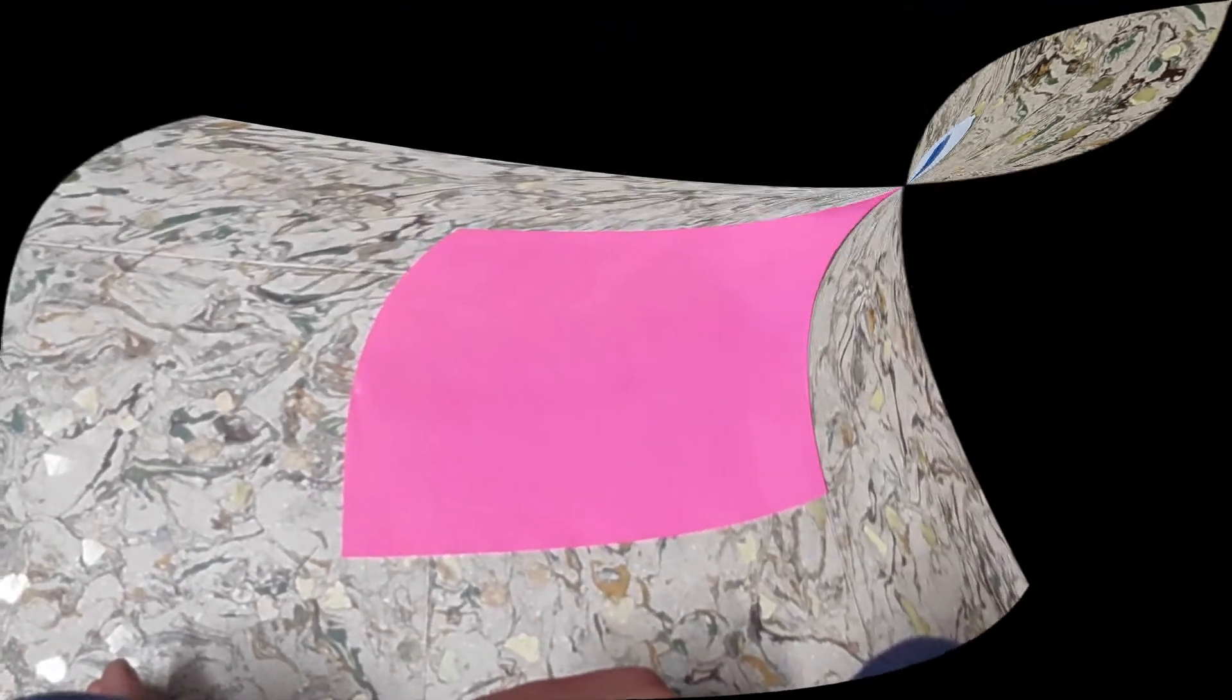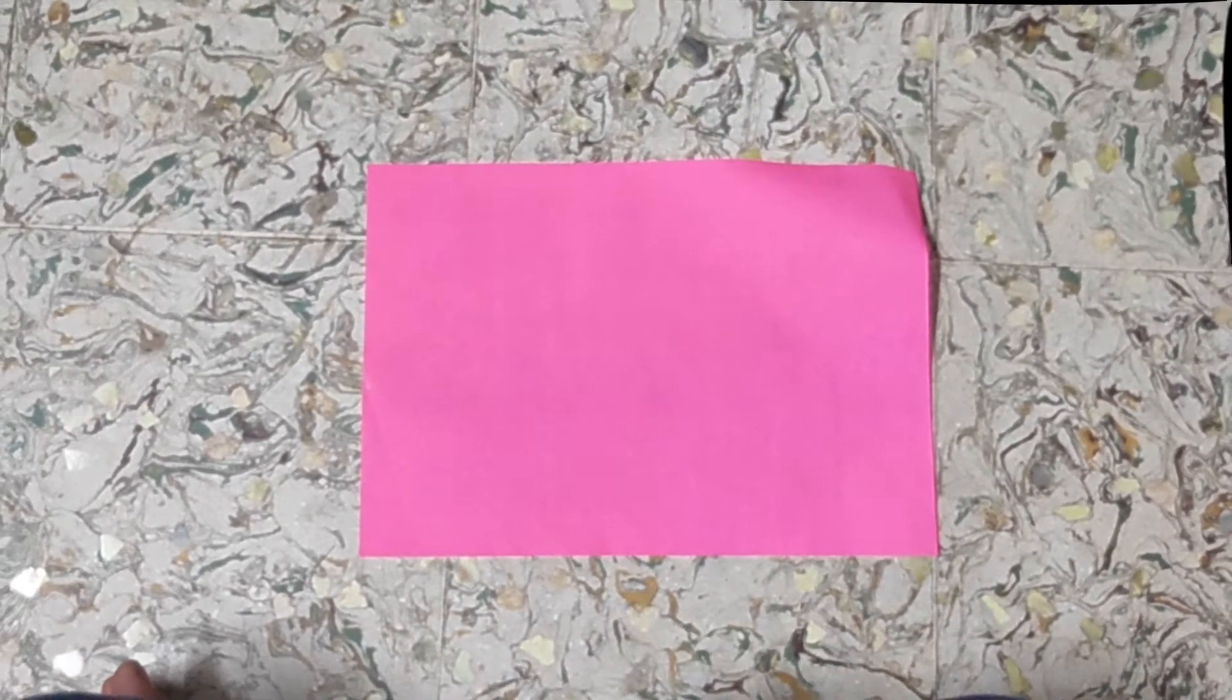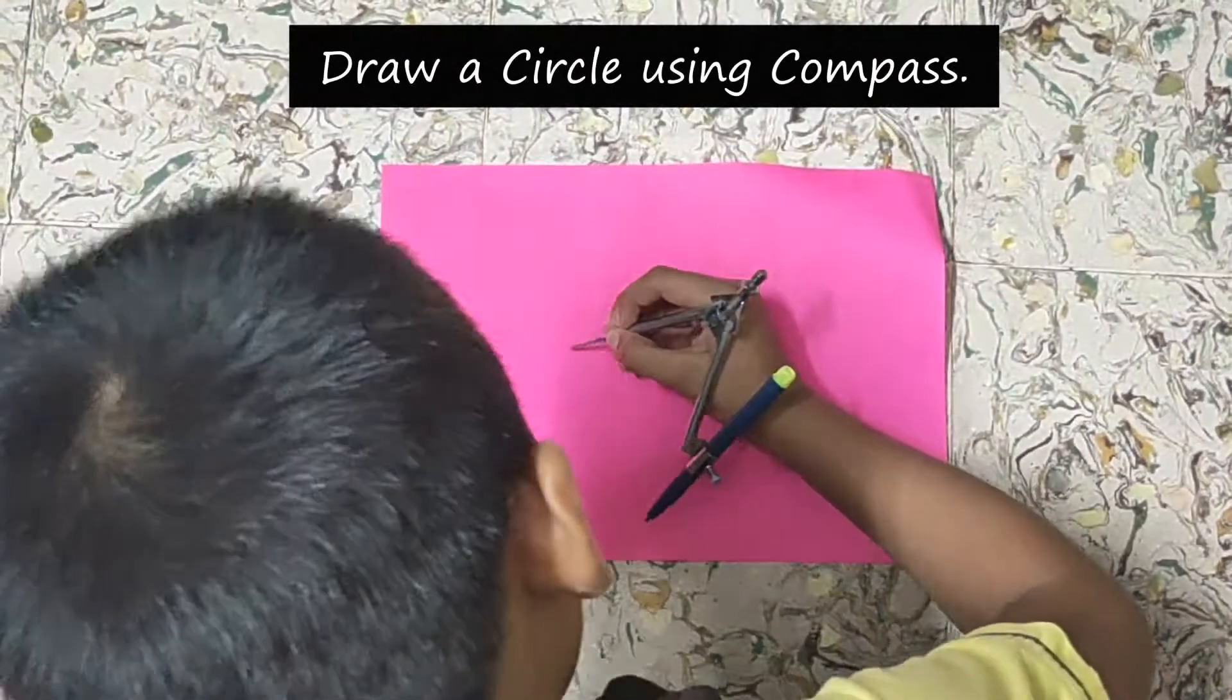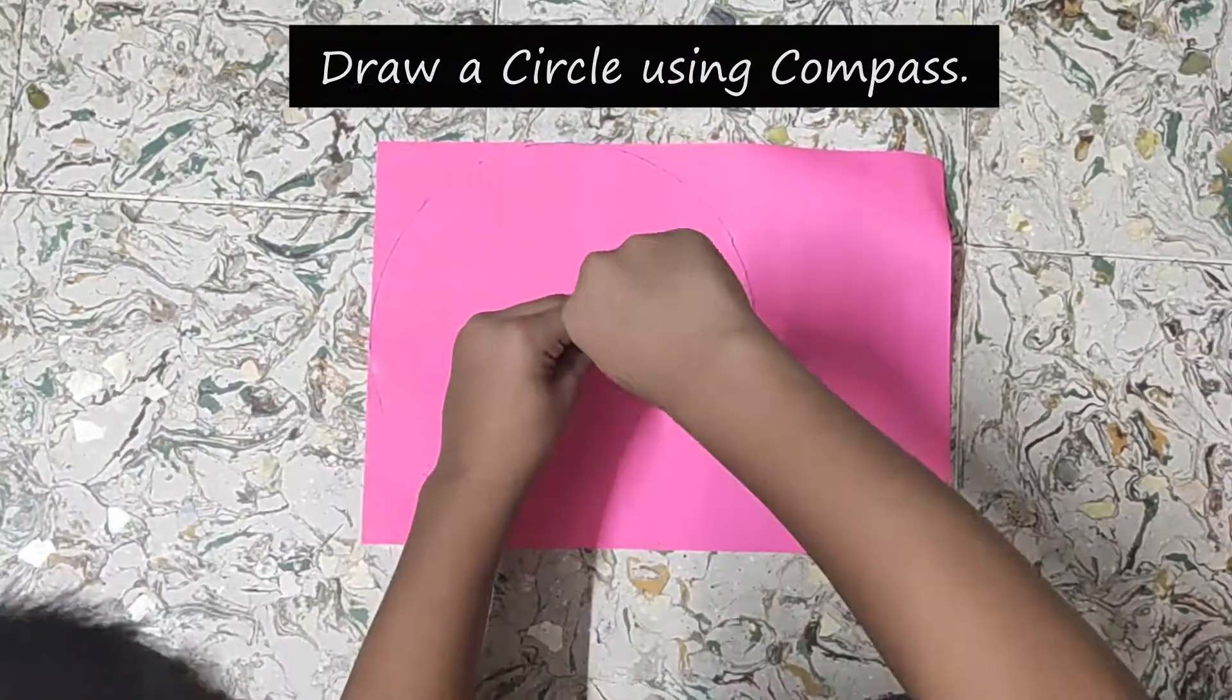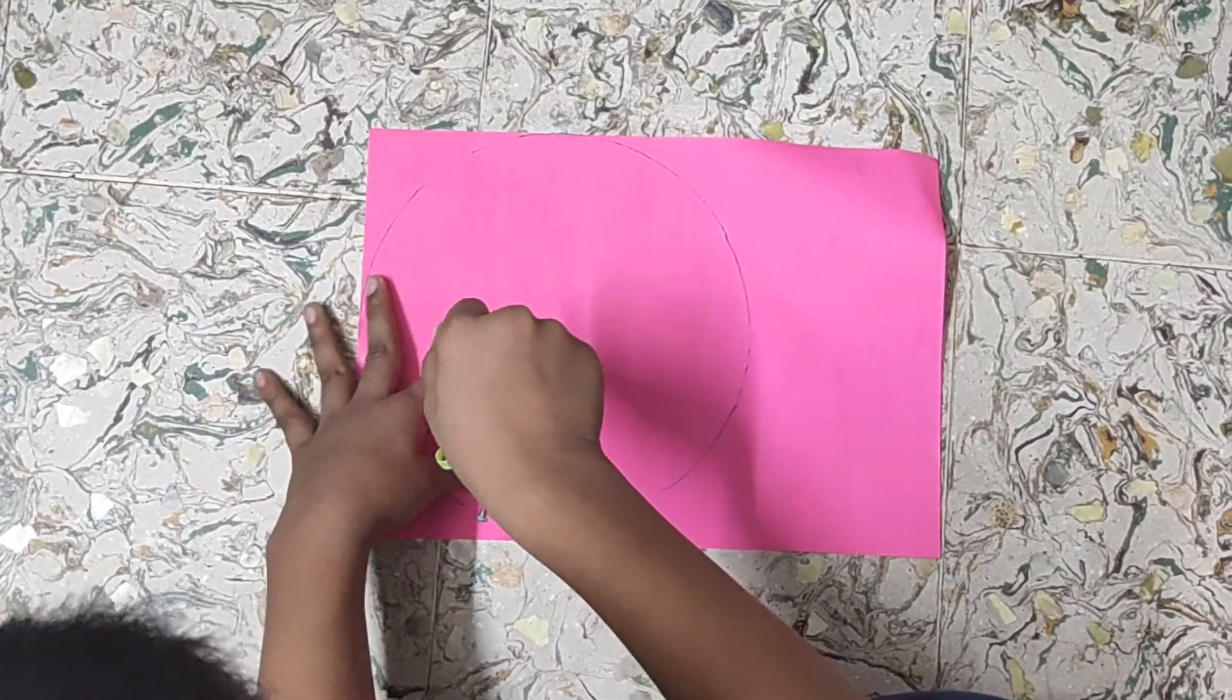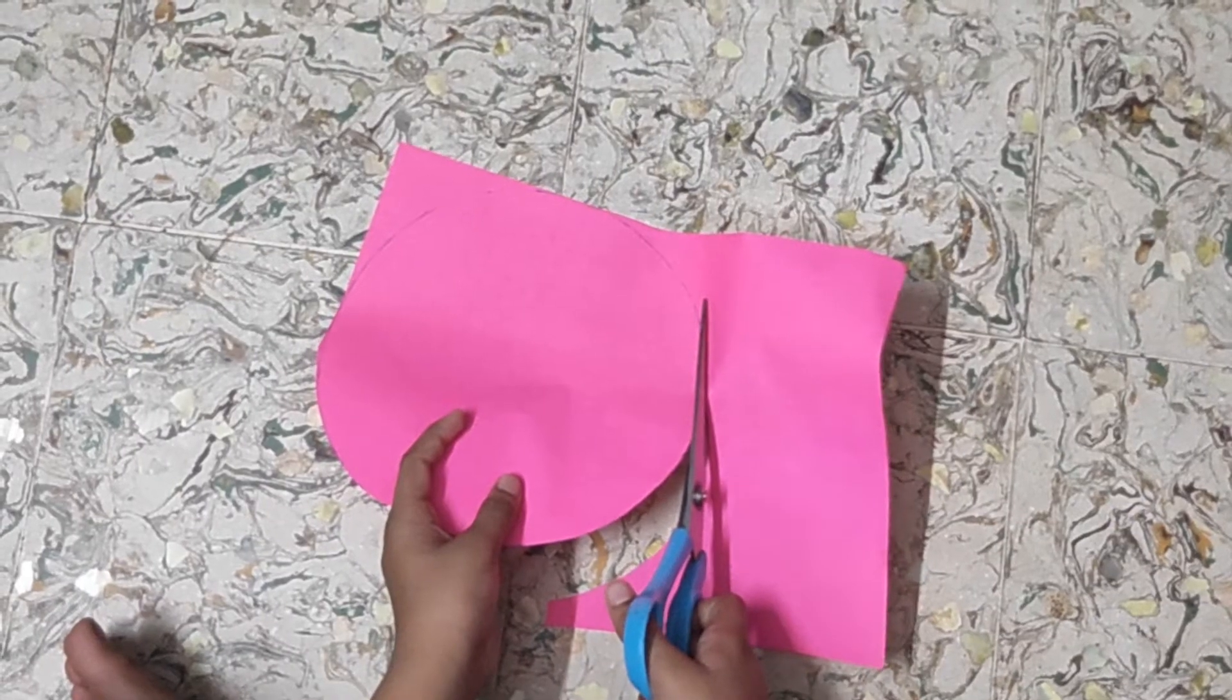Before we start, we will make a circle using compass. Here, I have drawn a circle. Now, I am cutting.